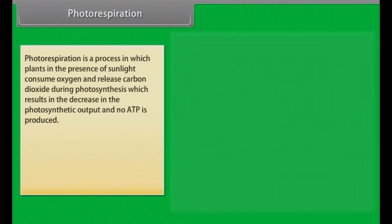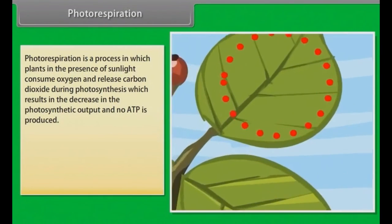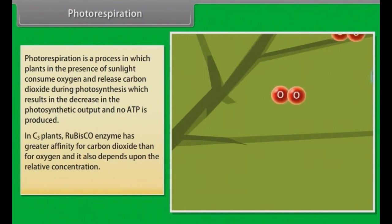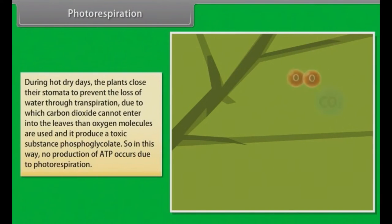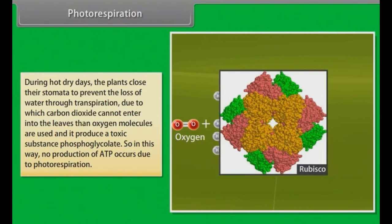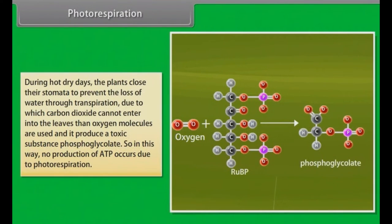Photorespiration: Photorespiration is a process in which plants in the presence of sunlight consume oxygen and release carbon dioxide during photosynthesis, which results in the decrease of photosynthetic output and no ATP is produced. In C3 plants, rubisco enzyme has greater affinity for carbon dioxide than for oxygen and it also depends upon the relative concentration. During hot dry days, the plants close their stomata to prevent the loss of water through transpiration, due to which carbon dioxide cannot enter into the leaves. Then oxygen molecules are used and it produces a toxic substance, phosphoglycolate. So in this way, no production of ATP occurs due to photorespiration.